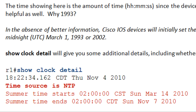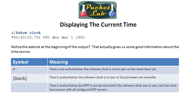You can see that we're getting our time source from NTP, and it also gives additional information — we're running daylight saving time and it shows when that begins and ends. When you do 'show clock,' you want to see nothing in front of the time. You might see an asterisk or a period. The asterisk means the time is not authoritative — the software clock is not synced or has not been set.